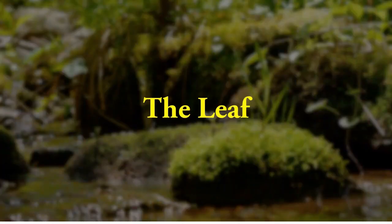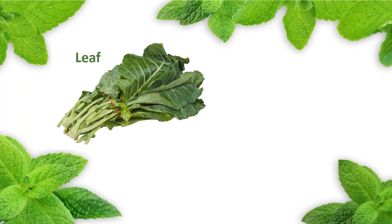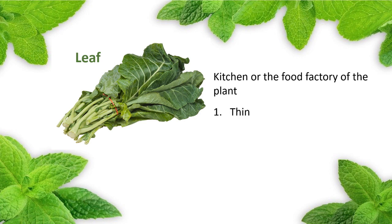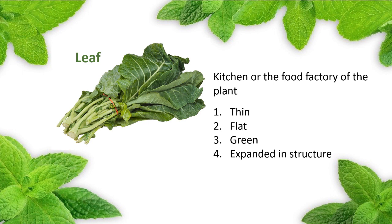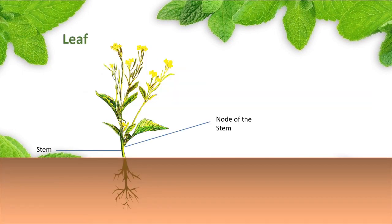The leaf is one of the most important parts of the shoot. It is called the kitchen or the food factory of the plant. It is a thin, flat, green, expanded structure which is concerned with the manufacture of food. It arises from the node of the stem and has a bud called the axillary bud in its axil.